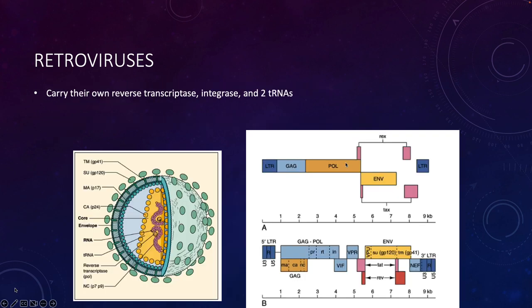Because they have this really unique type of replication, they have to have their own reverse transcriptase. They generally carry it with them, as illustrated here in this diagram of the virion. Here's the RNA and it has this reverse transcriptase protein that it made in its previous cell and carries with it so that when it infects the new cell, it can not only begin transcription but also reverse transcribe its RNA to be integrated into the host DNA.